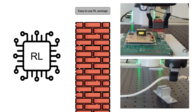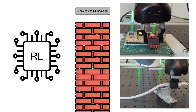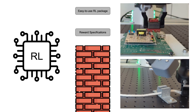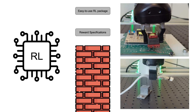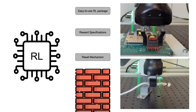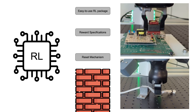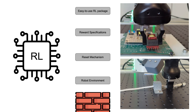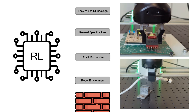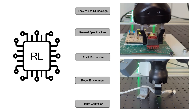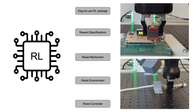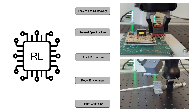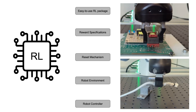We need an easy-to-use RL package with reliable implementation of the learning algorithm. We need to define the task with appropriate reward signals, a reset mechanism to perform automatic reset, and a robot environment through which the policy interacts with the real world. Depending on the task, we also need a good controller that allows safe exploration of the environment without damaging the robot or the workpiece.